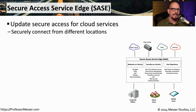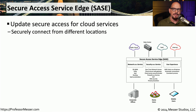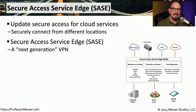One of the challenges with providing the right type of authentication and authorization is that users can be located anywhere. Some users may be located in the corporate office, others may work from home, and others may have a field service position which takes them across the world. And the applications that we use may be located on a public cloud, across the internet, or in our private data center. We need some way to provide a secure mechanism for communication regardless of where the user happens to be and regardless of where the application resides.